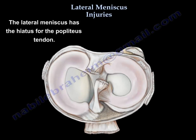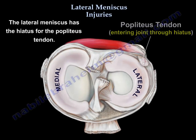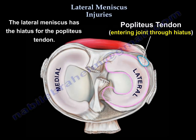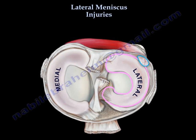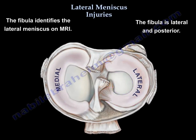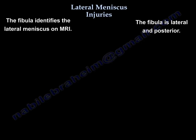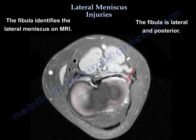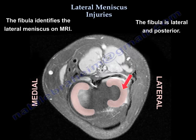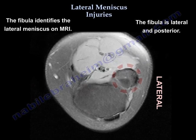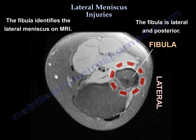The lateral meniscus has the hiatus for the popliteus tendon. The fibula identifies the lateral meniscus on MRI. The fibula is lateral and posterior.